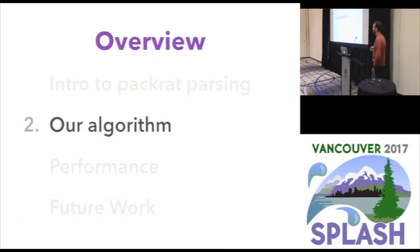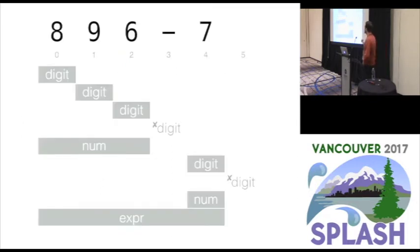So that is a brief introduction to packrat parsing. Now I want to talk about our algorithm for making an incremental parser from a regular packrat parser. And when I do that I'm going to use a slightly different representation of the memo table than we used before. And you'll see why I'm using this in a minute.